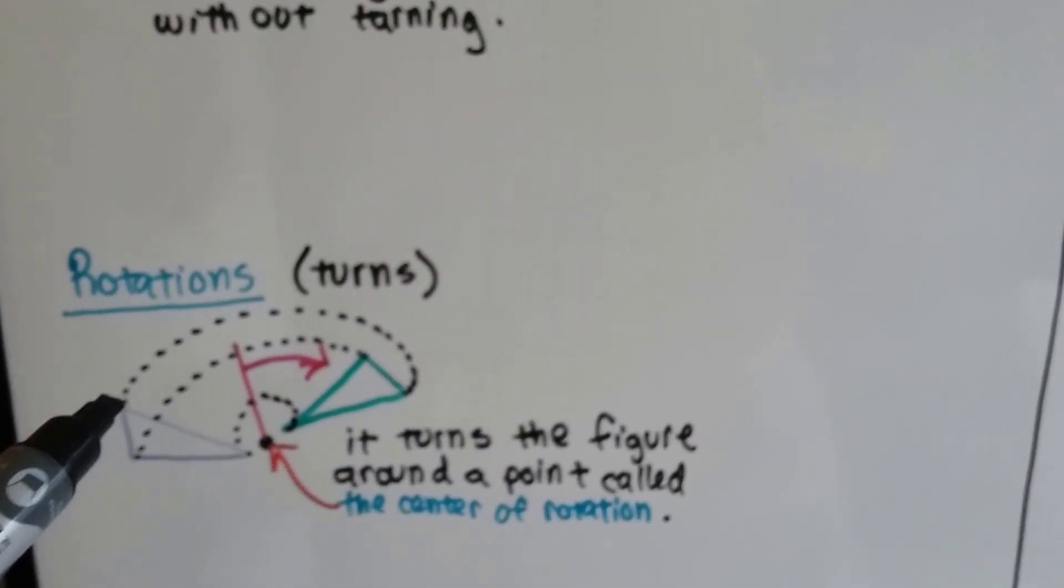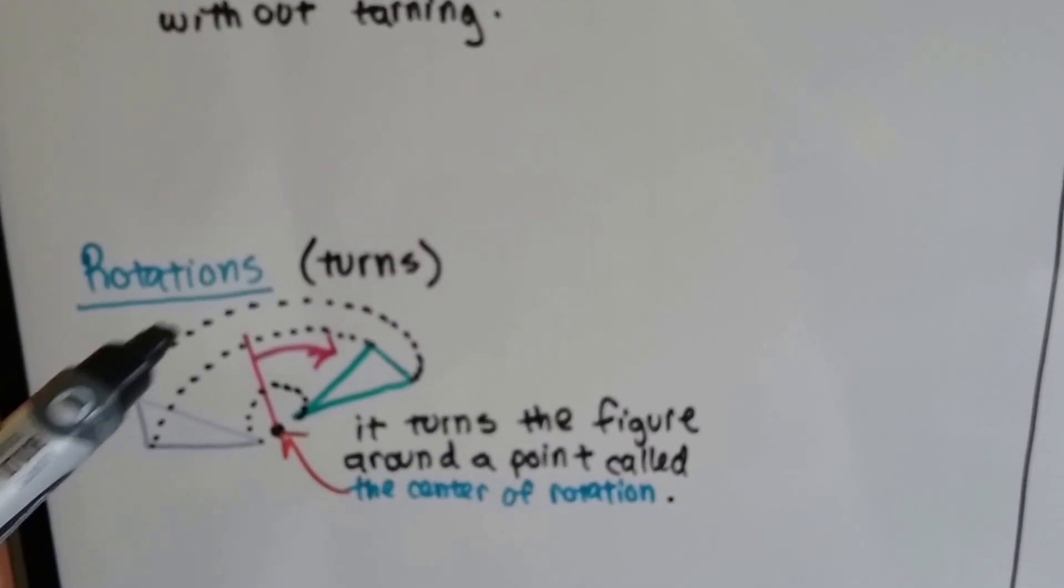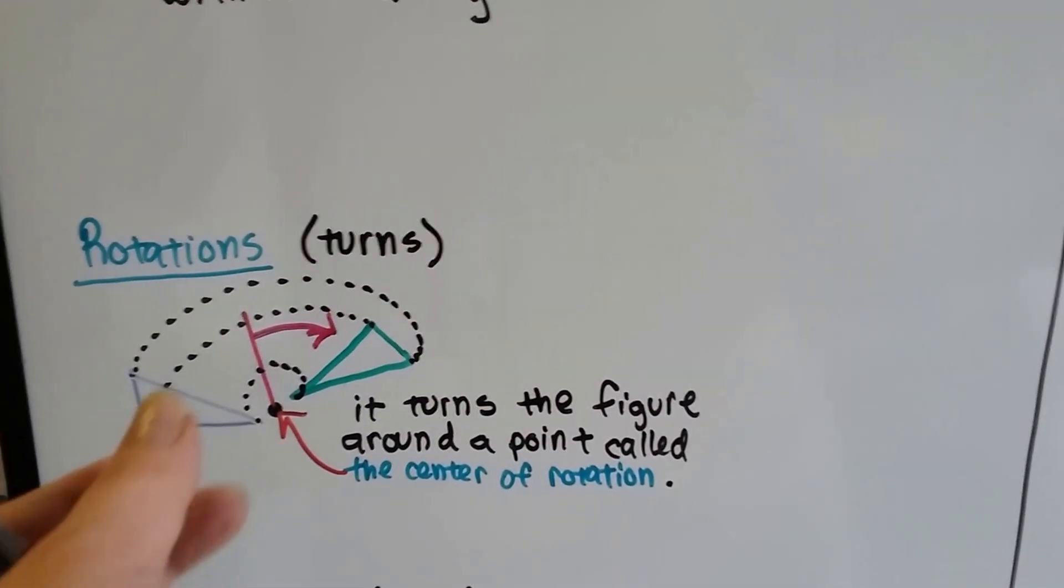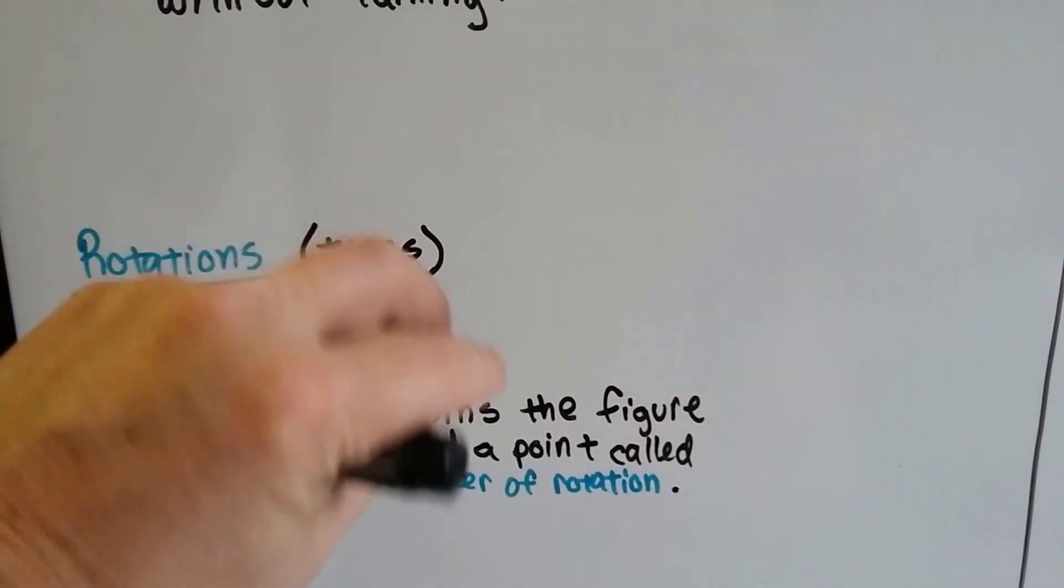Rotations or turns. Rotations turn the figure around a point called the center of rotation, the dot right there. It slowly rotates it around.